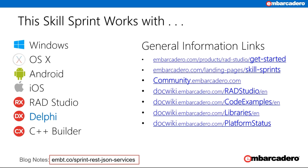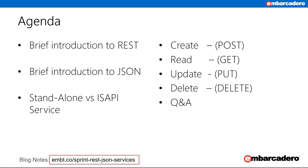The skillsprint is relevant to RAD Studio Delphi and C++ Builder, and as you're watching the Delphi skillsprint the code will be written in Object Pascal. For the C++ version you can join us again on Thursday. We're going to build a REST JSON service which runs over HTTP, and we'll take a very brief look at what REST and JSON are, with links on the blog post for more information.